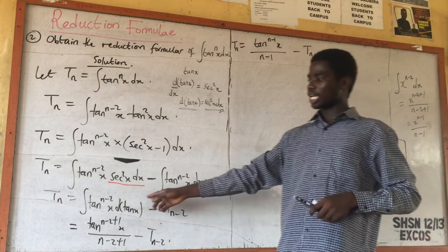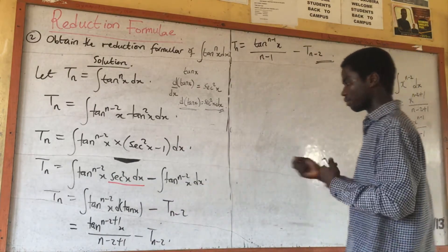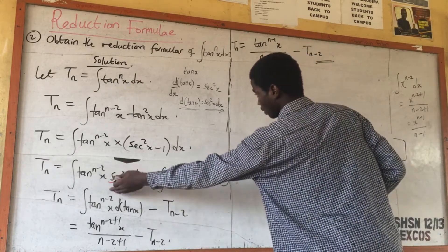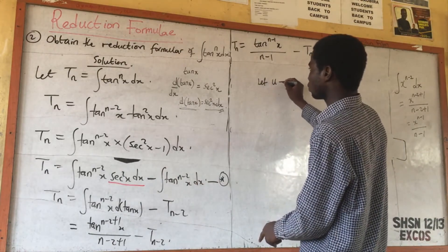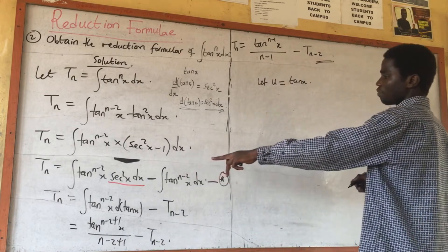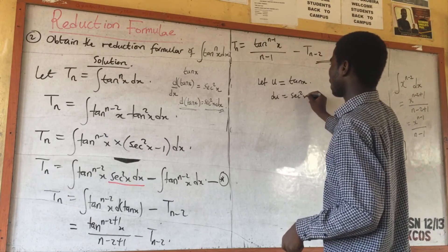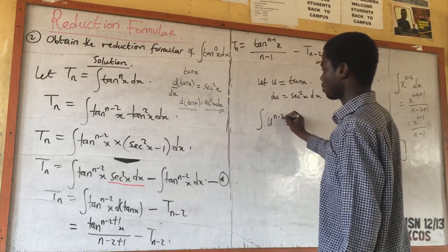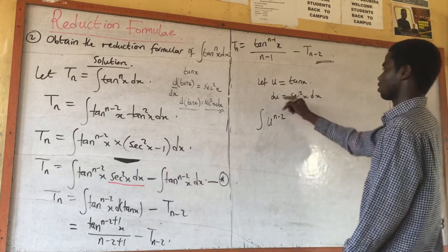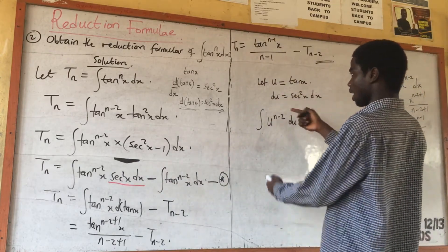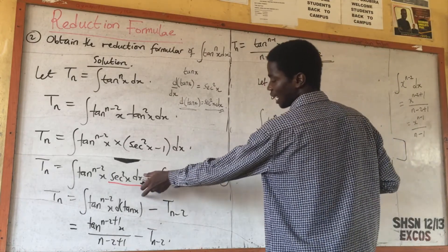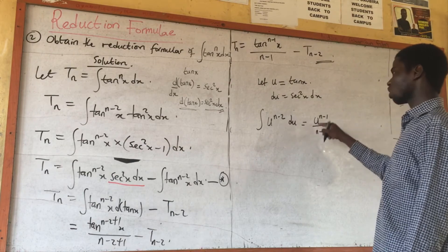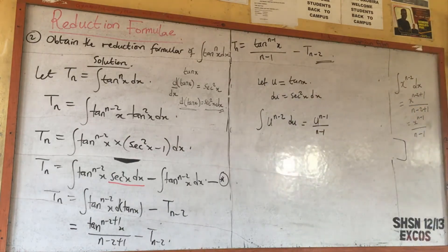If you don't follow that approach, from the starred step you can let u = tan(s), so du = sec²(s) ds. The integral of tan^(n-2)(s) times sec²(s) ds becomes u^(n-2) du, since sec²(s) ds = du. Integrating gives u^(n-1)/(n-1), and replacing u with tan(s) gives the same result.